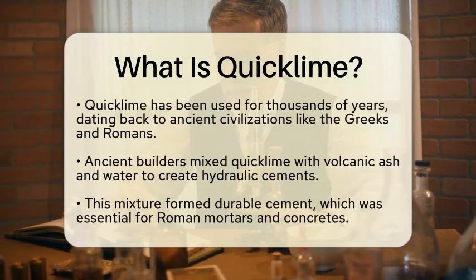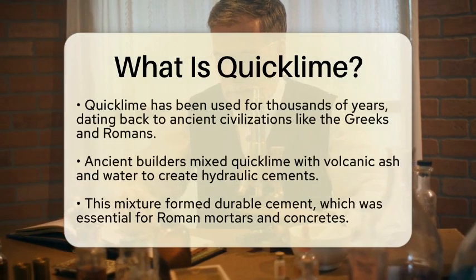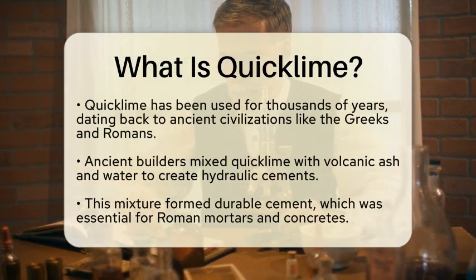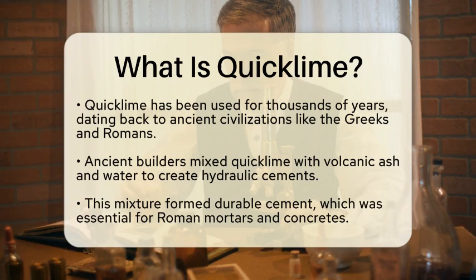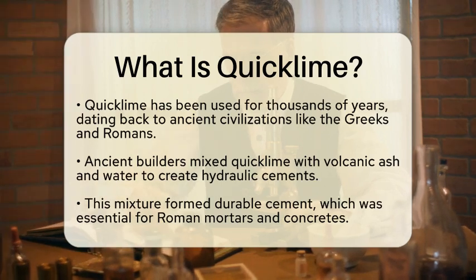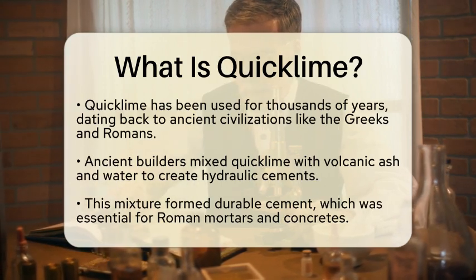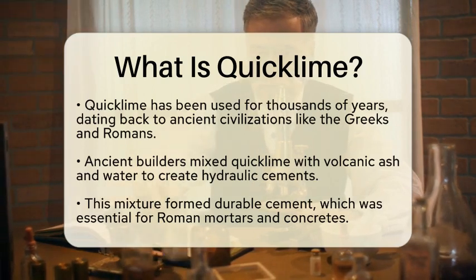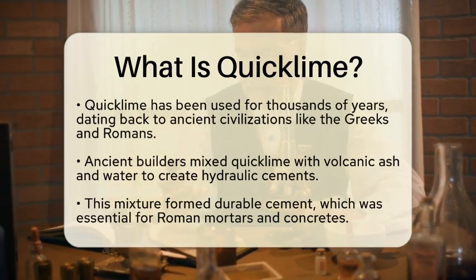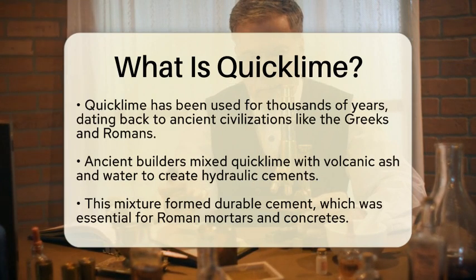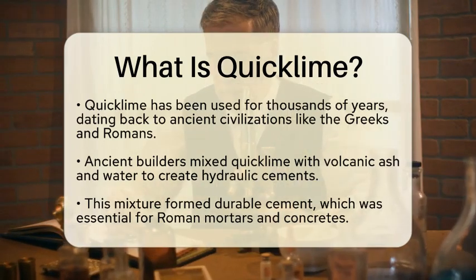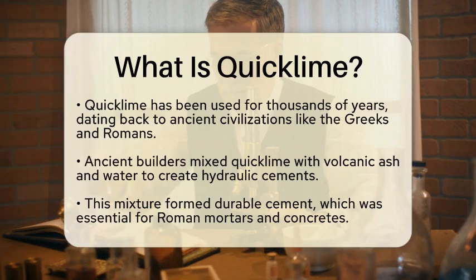QuickLime has a rich history, being one of the earliest chemical products known to humanity. Its use dates back thousands of years. Ancient civilizations like the Greeks and Romans used QuickLime in construction — they mixed it with volcanic ash and water to create hydraulic cements. This mixture hardened into a durable cement, forming the basis for Roman mortars and concretes that have stood the test of time.